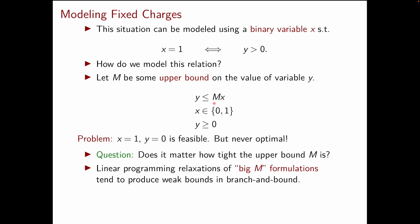Because they tend to produce weak bounds in branch and bound. Therefore generally if you have an alternative to using a big M formulation it is often preferred.